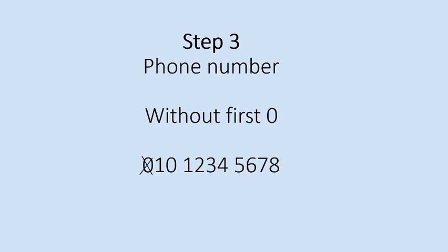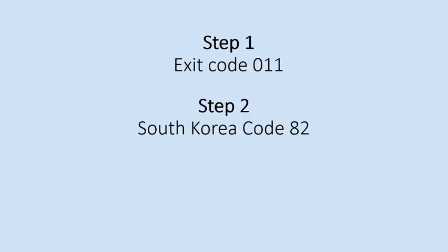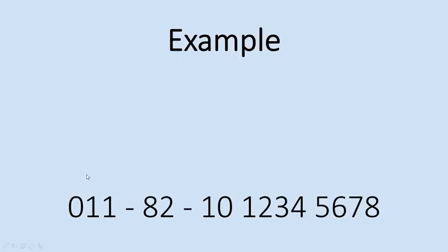Step 3: enter the mobile phone number without the first 0. So if you're calling a mobile number, you'll leave out the 0 and then add the 10 final digits. Review — Step 1: dial the exit code. Step 2: South Korea's code, which is 82. Step 3: the phone number without the 0. Here is an example. You'll dial 011, which is the exit code for the US. Then 82, which is South Korea's code. And then add the mobile number, except for that first 0.